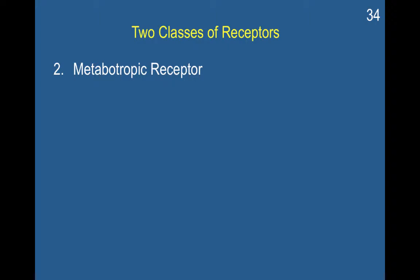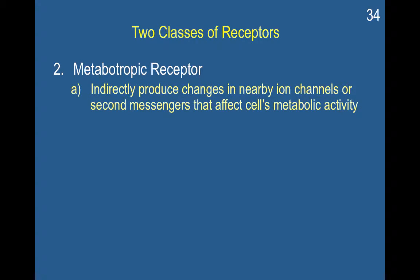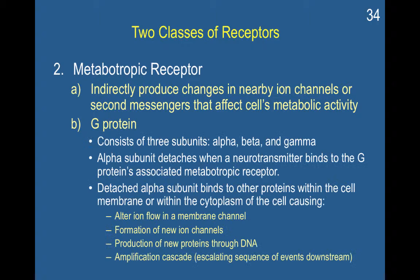A metabotropic receptor has a very different reaction to neurotransmitters. Metabotropic receptors indirectly produce changes in nearby ion channels, or they start a chain of reactions or secondary messengers that affect a cell's metabolic activity. Metabotropic receptors involve a G protein.